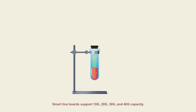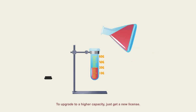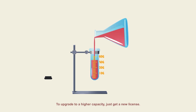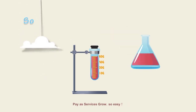Smart line boards support 10G, 20G, 30G, and 40G capacity. To upgrade to higher capacity, just obtain a new license. Pay as services grow — so easy.